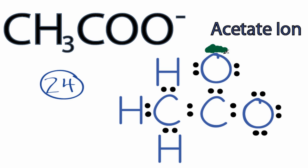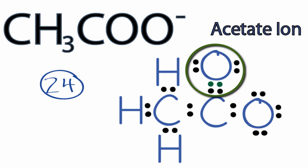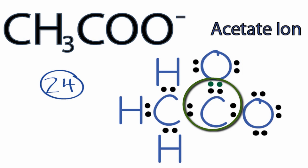Let's take two valence electrons here from this oxygen and share them to form a double bond with the carbon. The oxygen still has eight valence electrons, but now the carbon also has eight valence electrons, and we're only using the 24 valence electrons we have for the CH3COO- Lewis structure. So that's the Lewis structure for the acetate ion.